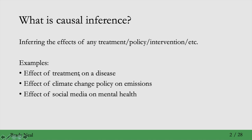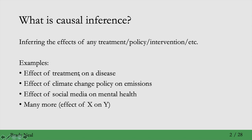You might want to pick the policy that is most effective at reducing emissions — the one that causes the largest reduction in emissions. Similarly, say you notice that there are rising mental health bad outcomes, and you think that social media might be one of the important causes of this. So you could try to do a causal analysis to see how important social media is in contributing to this problem, maybe what percentage of the problem it contributes. So just generally, if you have any x that you want to talk about the effect of on some y, that's what causal inference is for.